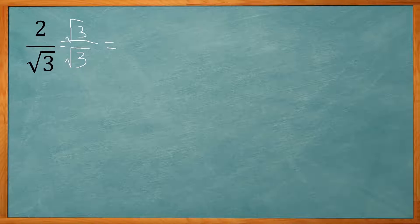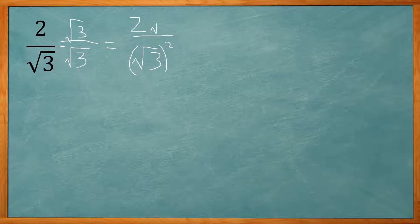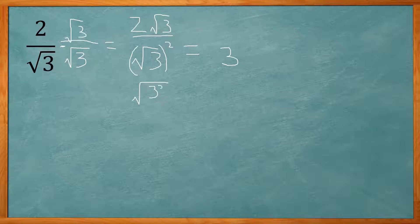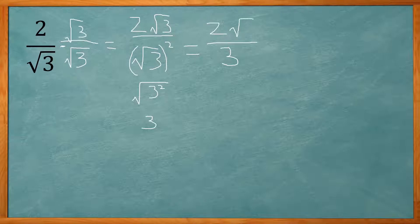If we multiply the bottom by square root of 3, square root of 3 times square root of 3 is really square root of 3 squared. On the top we have 2 times square root of 3. On the bottom, square root of 3 squared is just 3, because the square root of anything squared is just itself. So we end up with 3 on the bottom, and we no longer have any square roots on the bottom — we have rationalized the denominator. So 2 over the square root of 3 becomes 2 square root of 3 over 3.